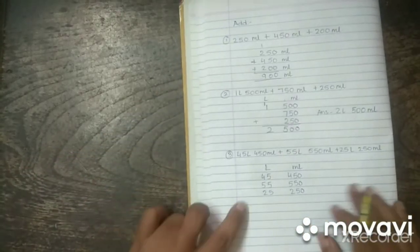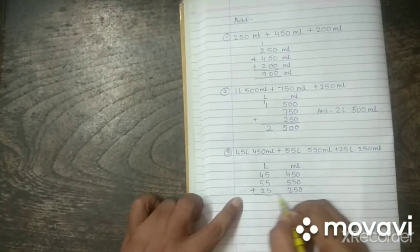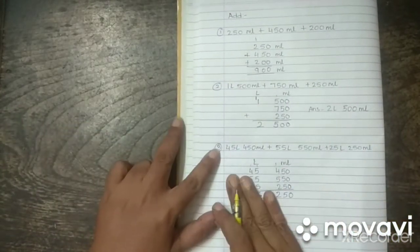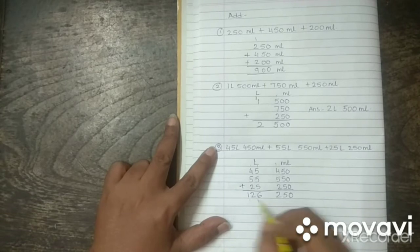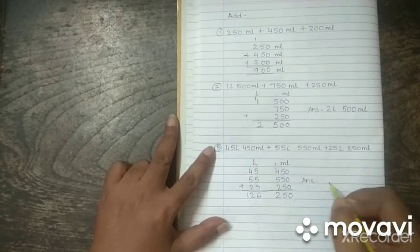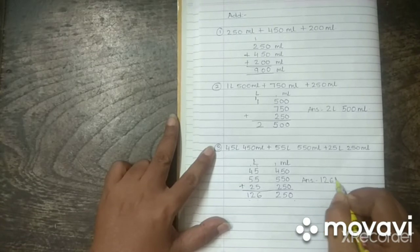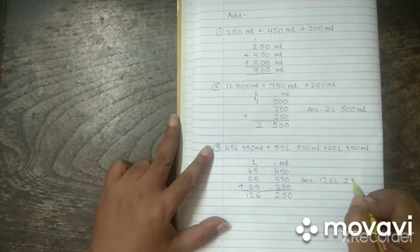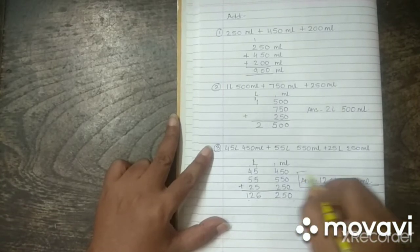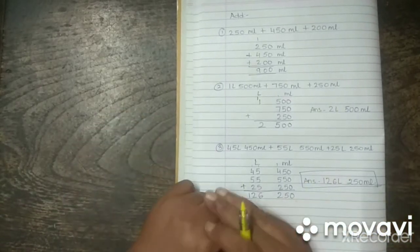Now, simple addition. You are supposed to add up all of these measurements. So, when you add this up, what do you get? 126 and 250. So, what is the answer that you get? It is 126 liters and 250 milliliters. I hope you have understood how addition happens.